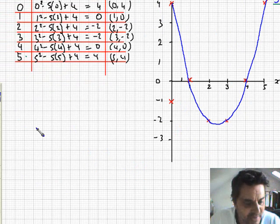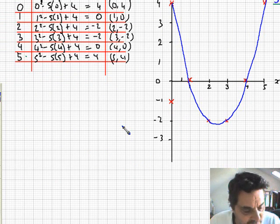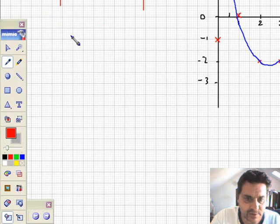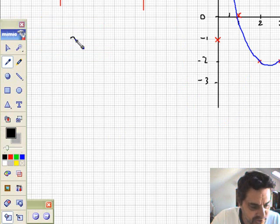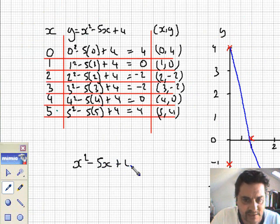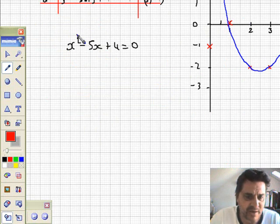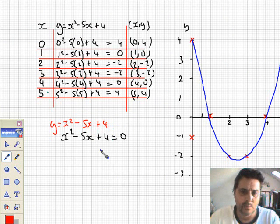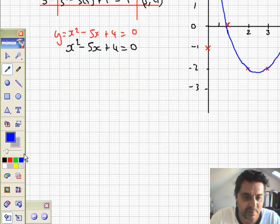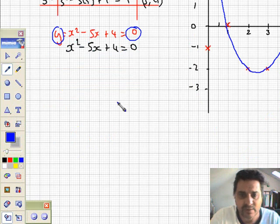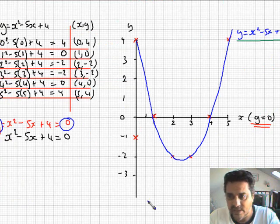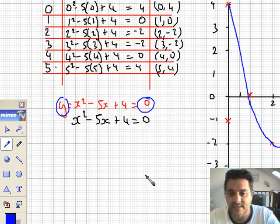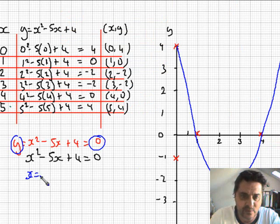The x axis is y equals 0 as an equation. Part b says use your graph and suitable straight lines to solve these equations. Each one requires a different equation. I've got to solve x squared minus 5x plus 4 equals 0. Compare it with the original: y equals x squared minus 5x plus 4. All I have to do is plot the line y equals 0, which is the x axis. We have two solutions: x equals 1 and x equals 4.